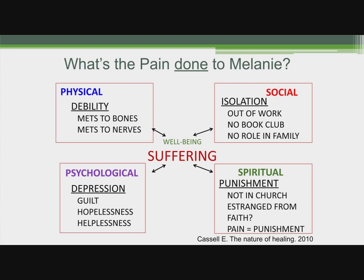Let's think about what pain has done to Melanie across four domains from Eric Cassell's work. Physically, she has mets to her bones and nerves, so she's disabled. Socially, she can't work anymore because she can't even sit down, she can't go to her book club, and the normal role in her family has been usurped because the pain has taken over her life. That's a major loss.